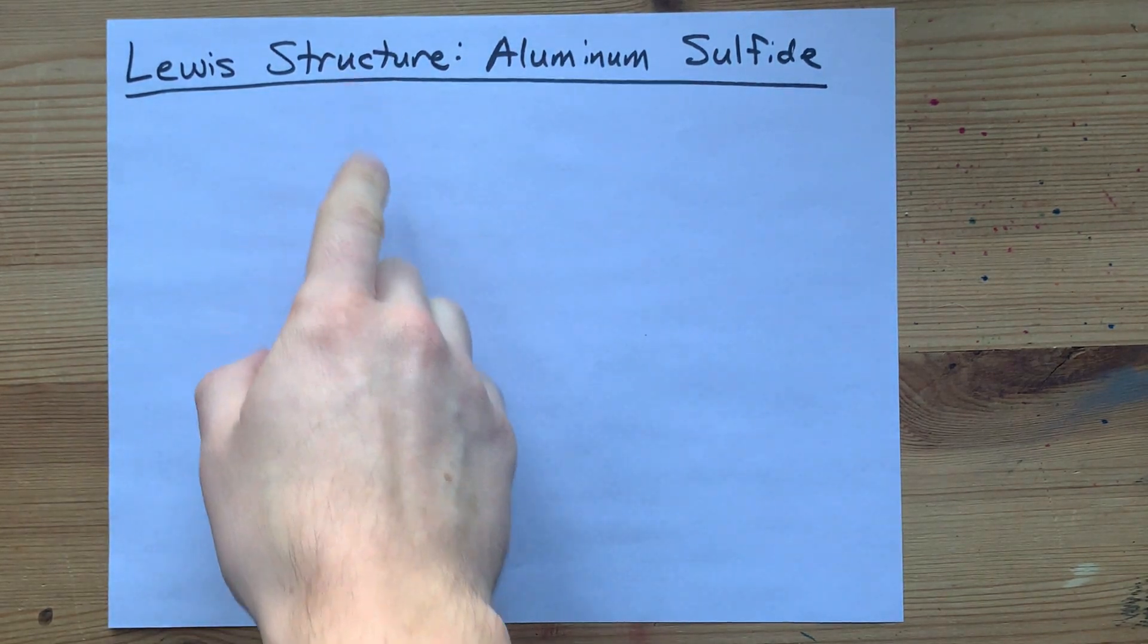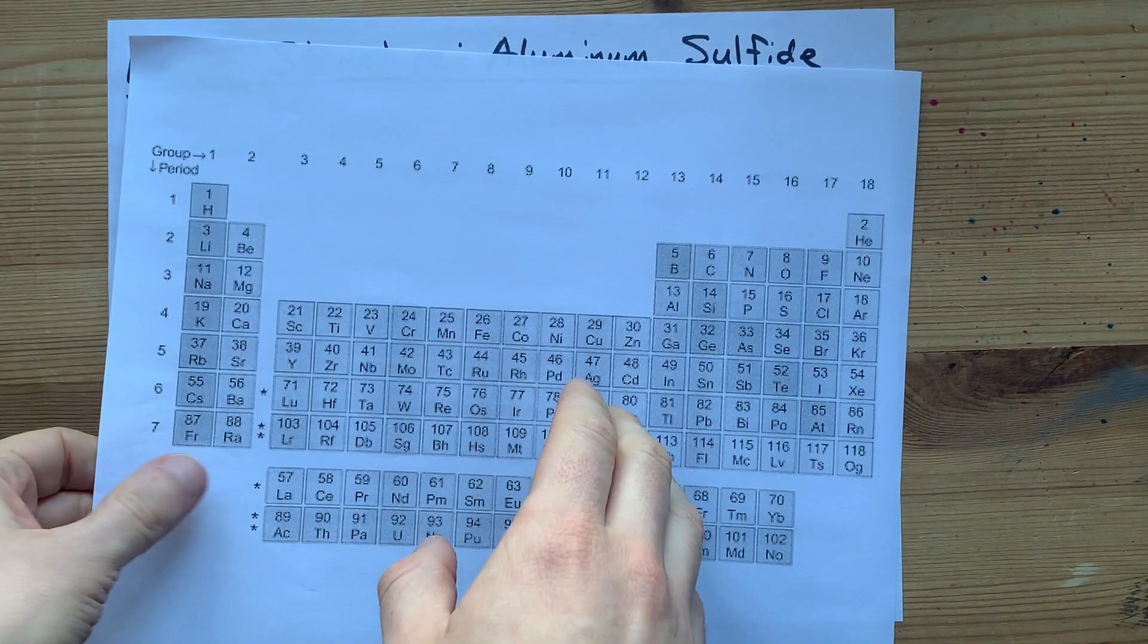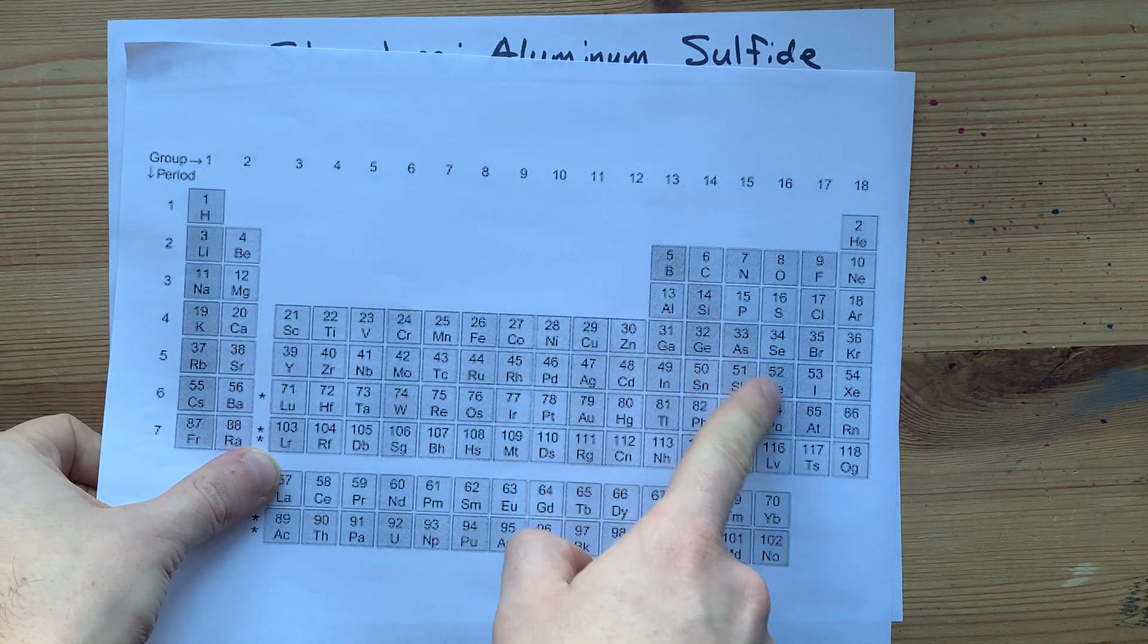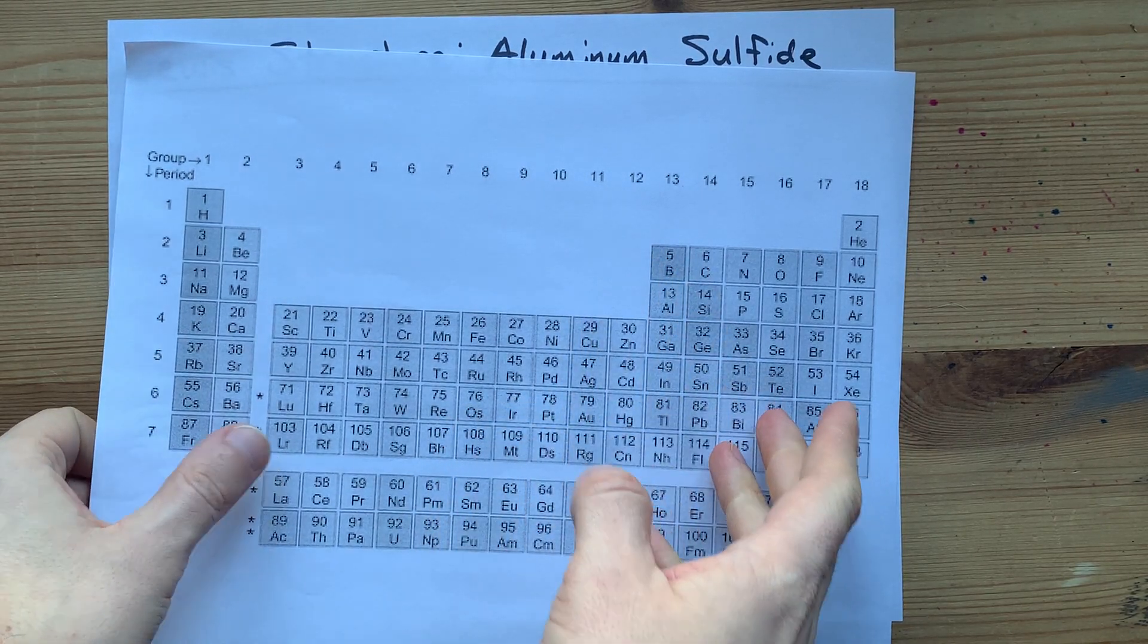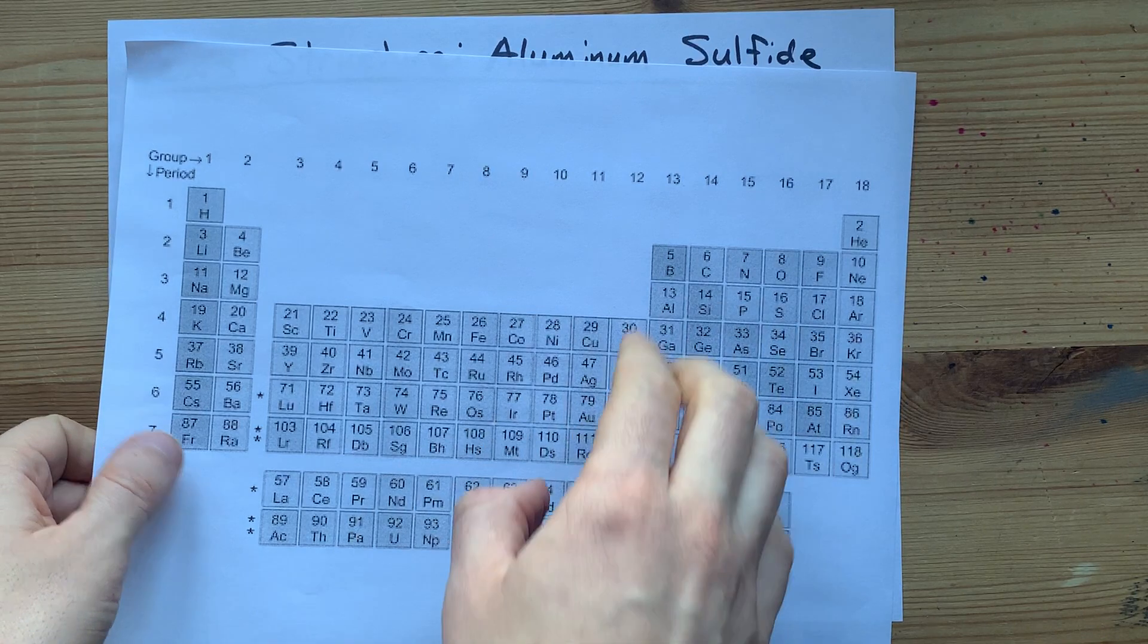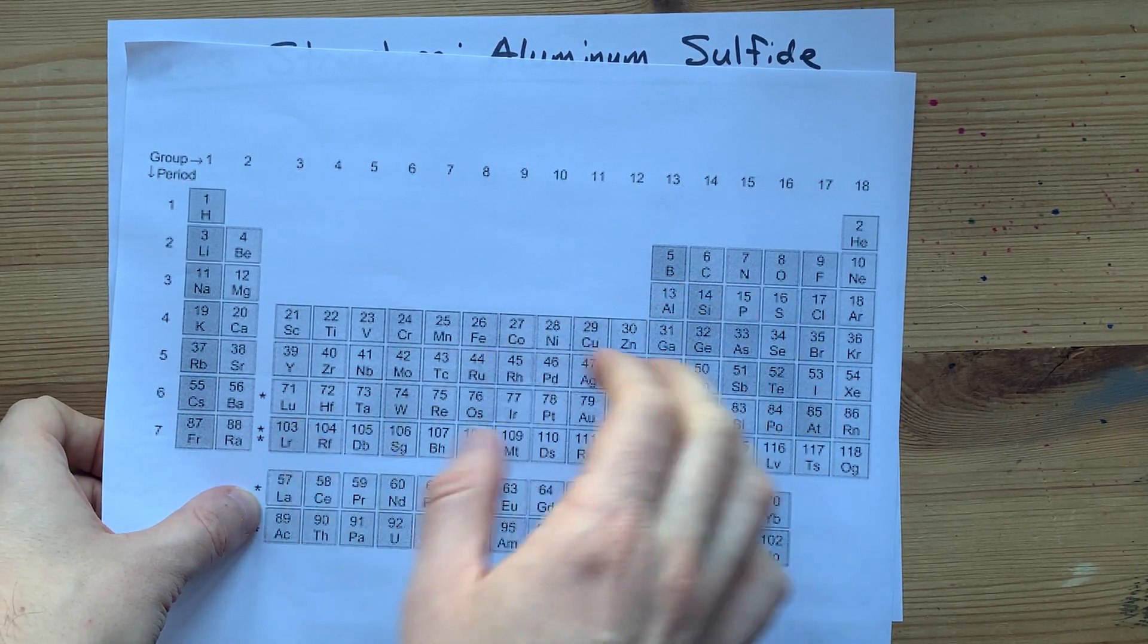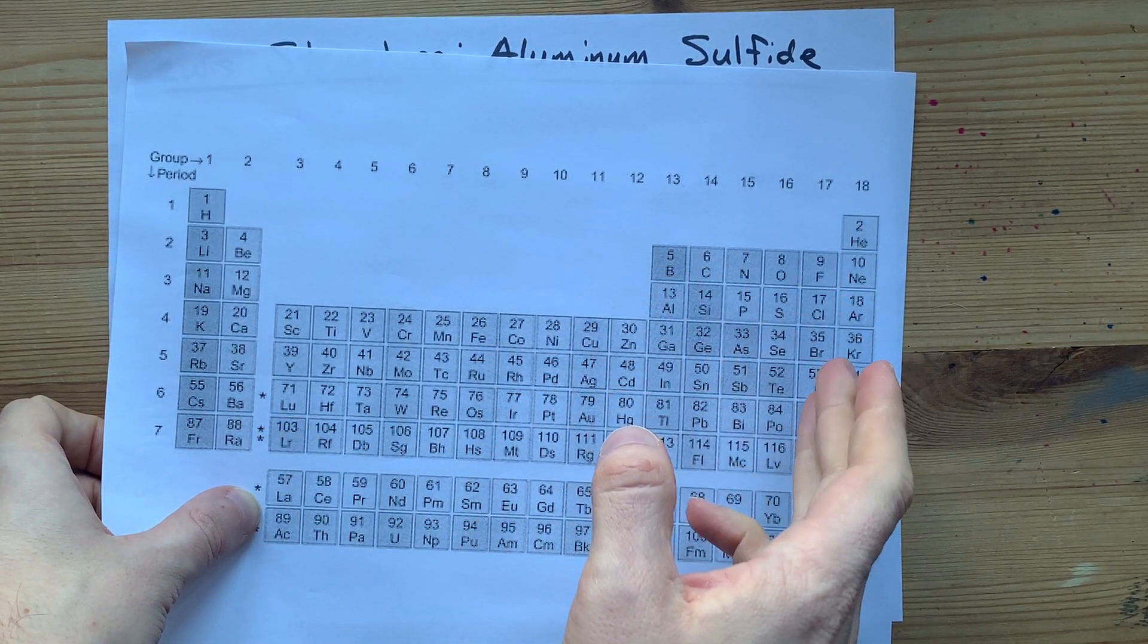You're here because you want to draw the Lewis structure of aluminum sulfide. The darkened staircase on this periodic table is semi-metals. It separates the metals on the left side from the non-metals on the right side.